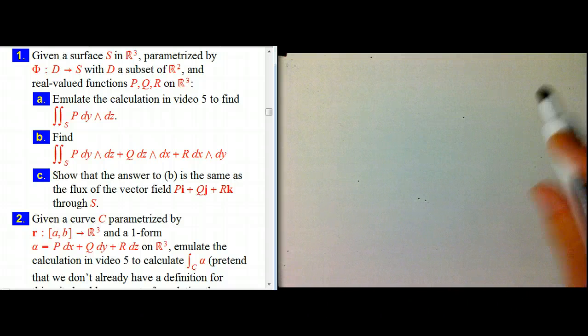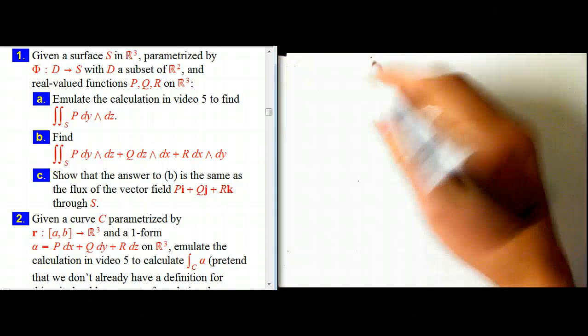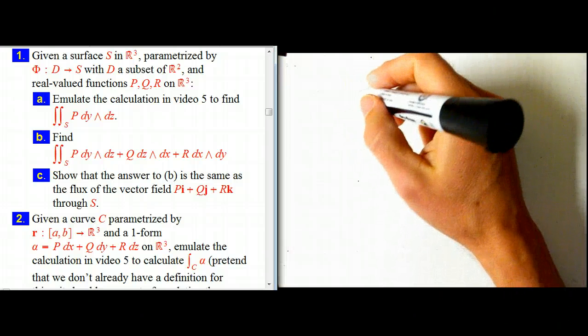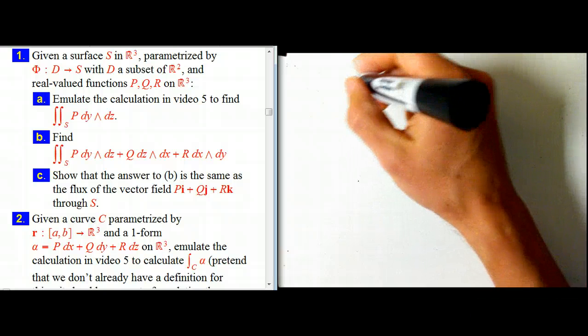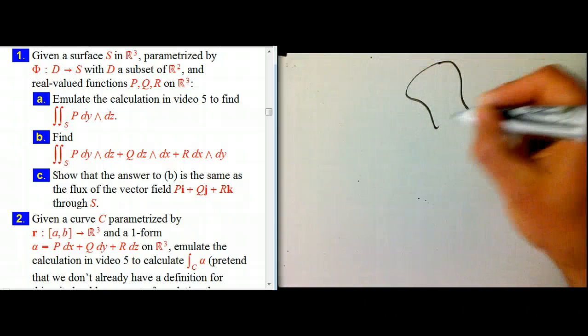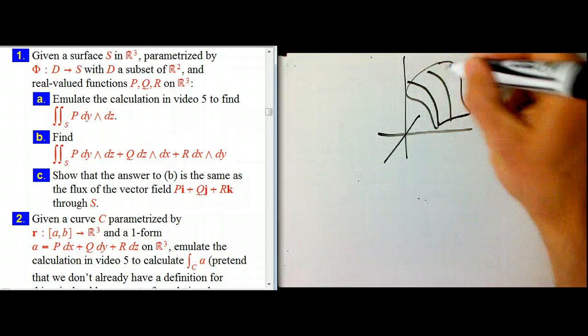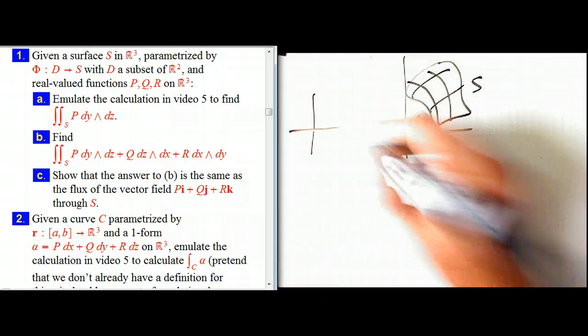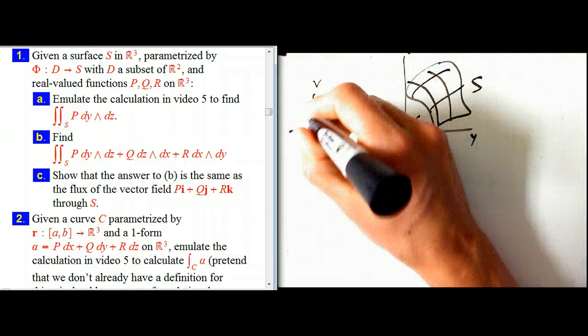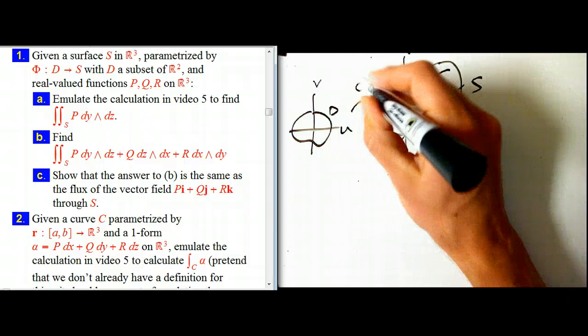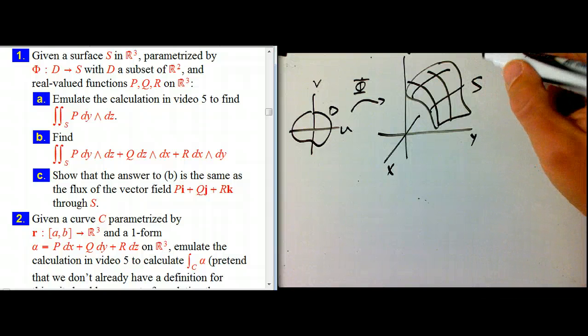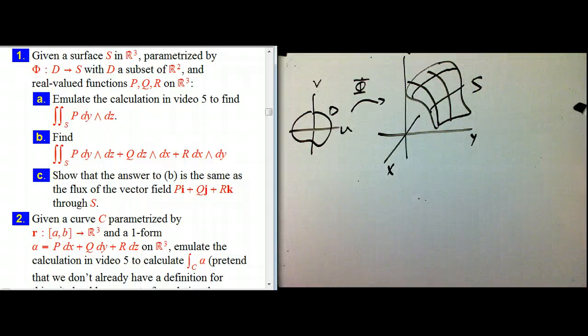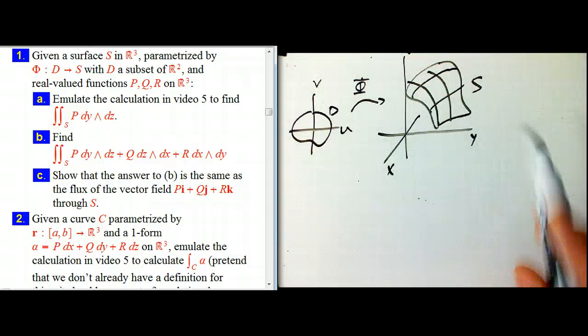So the first problem is taking off right from the last video, just making sure we understand the concepts there by doing it in another simple example. So we've got a surface in R³, S, and it's parametrized. Here's the XYZ land, here's the UV space parameters, here's D, and here's our parametrization map phi. And then we've got a two form that we want to integrate on that.